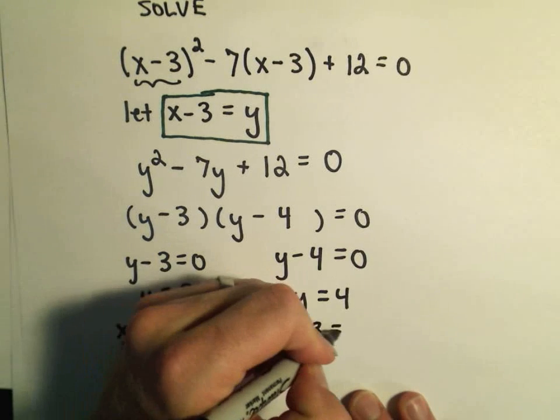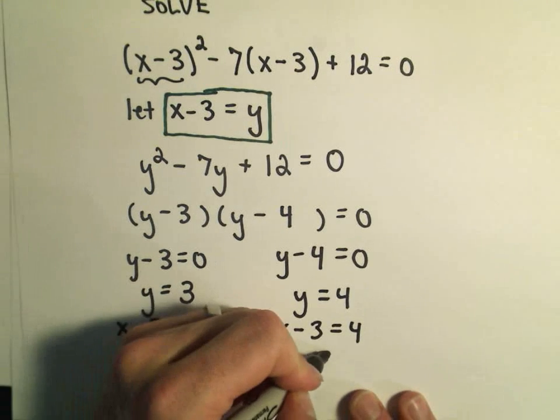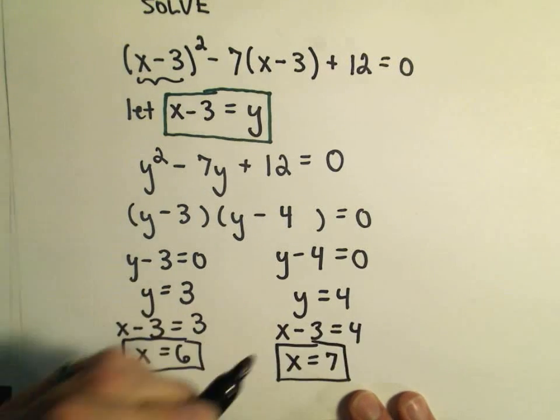And likewise, if I write x minus 3 equals 4, and add 3 to both sides, I'll get my other solution of x equals 7.